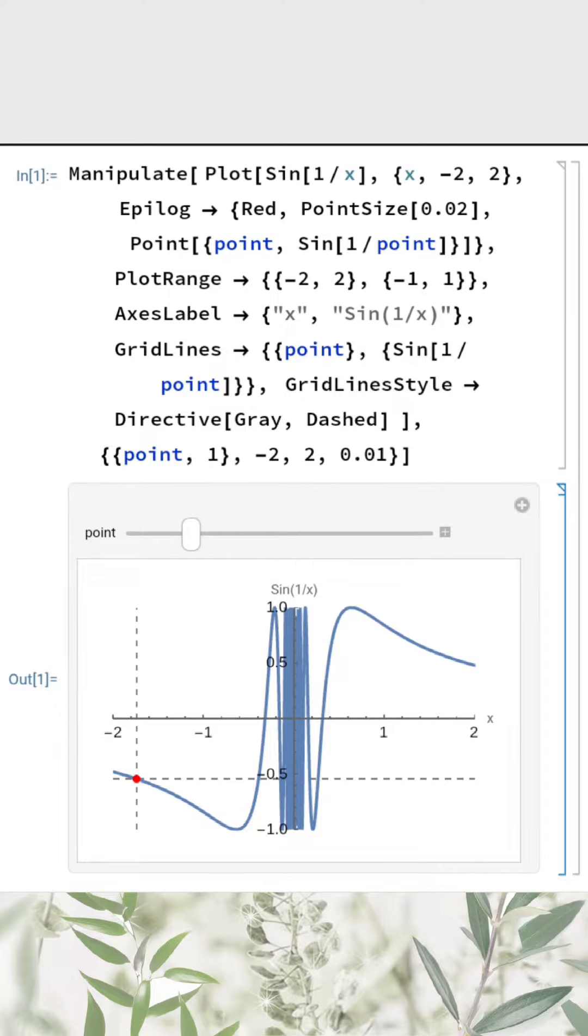As x gets closer to zero from the left (negative values), the function sin(1/x) starts to rapidly swing between positive and negative values without settling on a specific number.